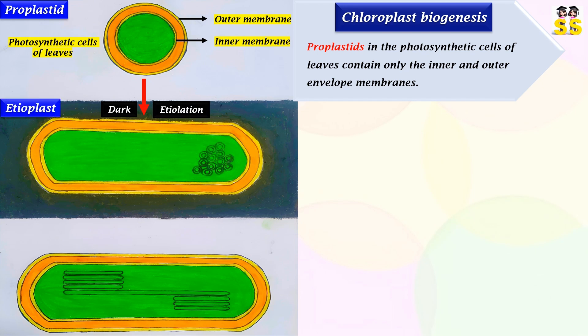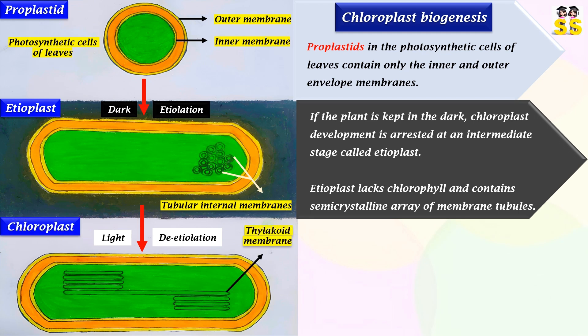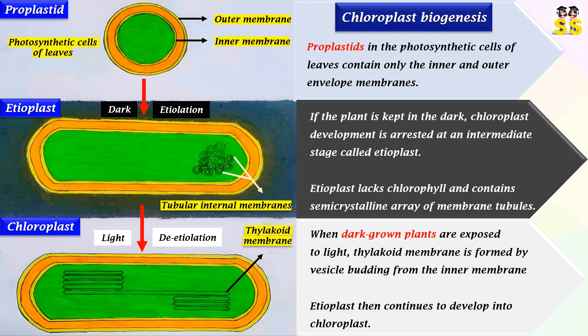Chloroplast development is arrested at this stage, and contains a semi-crystalline array of membrane tubules. Upon illumination, deetiolation occurs, which is marked by the transition from etioplast to chloroplast. The thylakoid membrane is formed by vesicle budding from the inner membrane, leading to the development of the chloroplast.